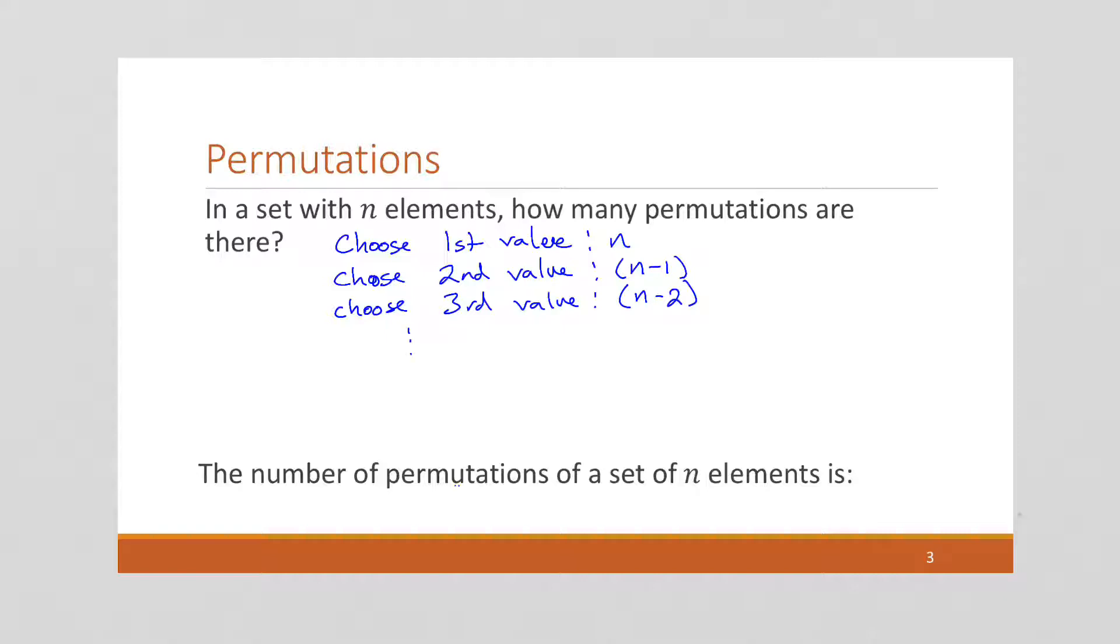If we keep going on this, we finally get to choose the last value. How many ways are there of choosing the last value? Well, out of the N elements, all but one of them have been used. So there's only one way to choose the last element. So the number of permutations of a set of N elements is going to be N times N minus one times N minus two times all the way down to one.